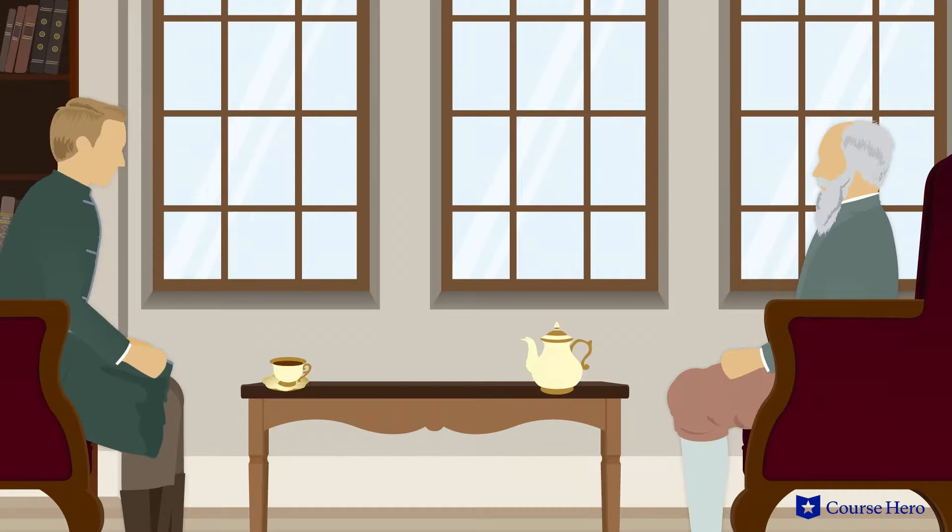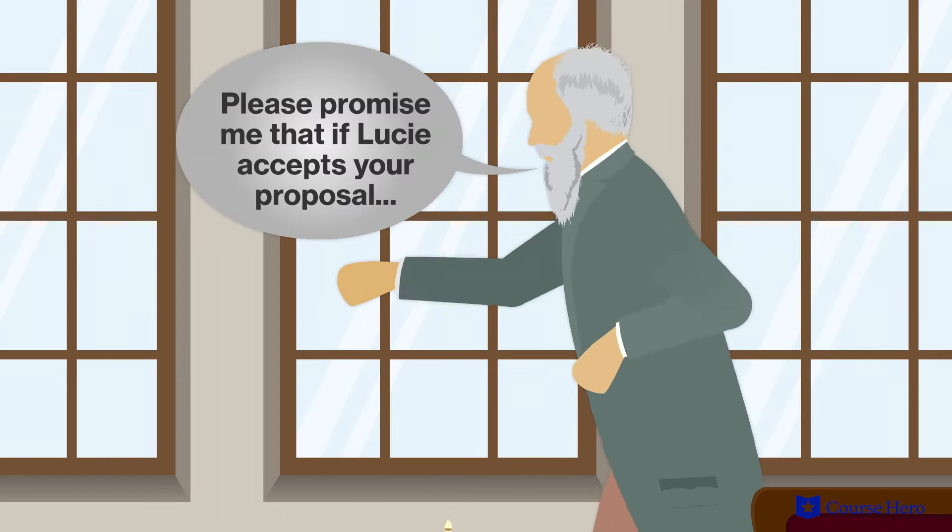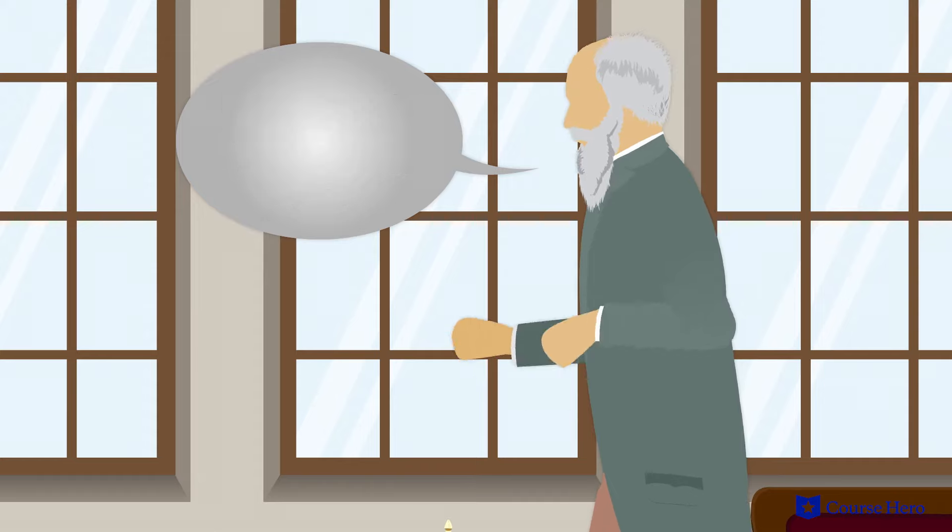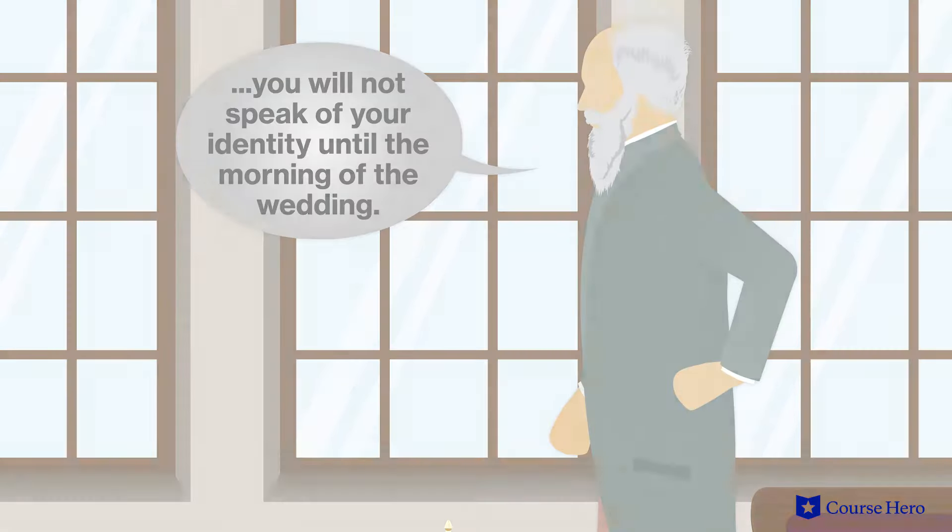Darnay is moved to admit who he really is, but as soon as he begins, the doctor becomes agitated and orders Darnay to stop. The doctor then makes Darnay promise that if Lucie accepts his proposal, he will not speak of his true identity until the morning of their wedding.